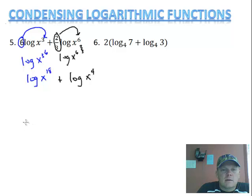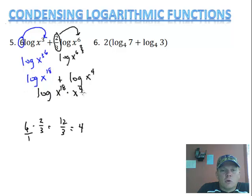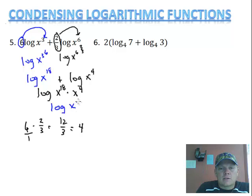That was 6 times 2/3 — put that over 1, I get 12 over 3, which reduces to 4. Now all I've got to do is rewrite and condense it together. Since it's plus, I'm going to multiply these things, so it's going to be x to the 18th times x to the 4th. When you're multiplying like bases, you add the exponents. So it's going to give me log x to the 22nd. And there's my condensed version of this one.